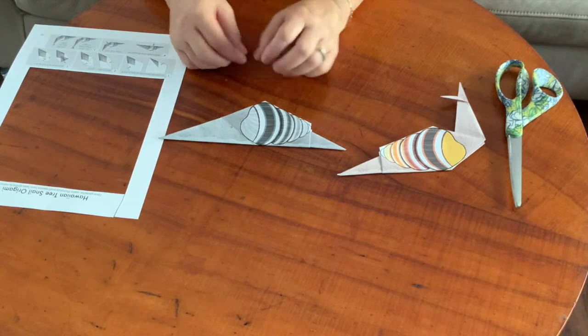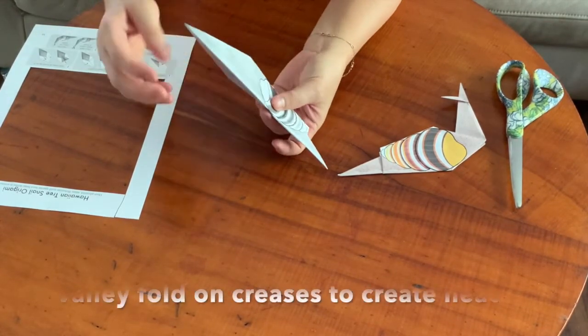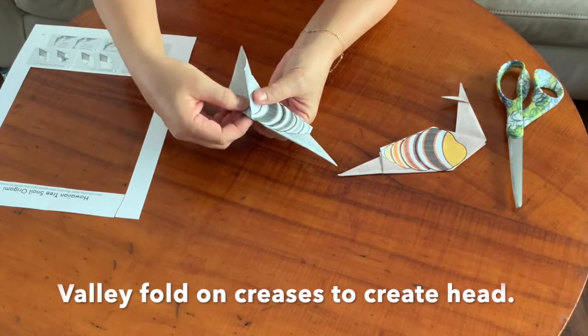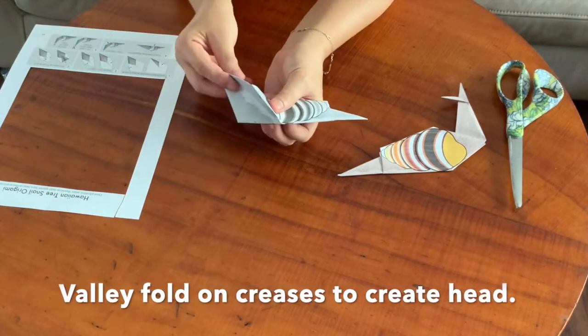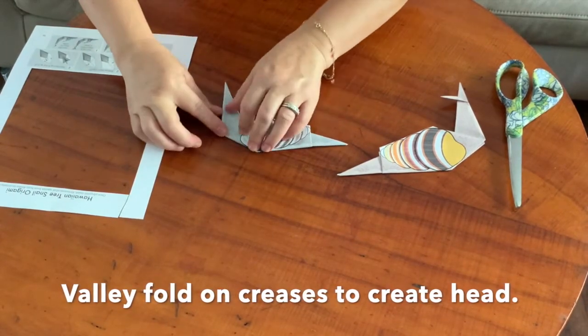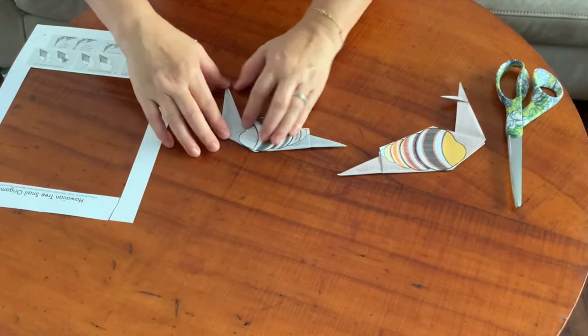Now you're going to create the head by kind of pushing it in into a valley fold. See how I push the midline in with my thumb, and it automatically folds in half along those nice creases. I close it back up, and now you've got the snail's body going up into its head.